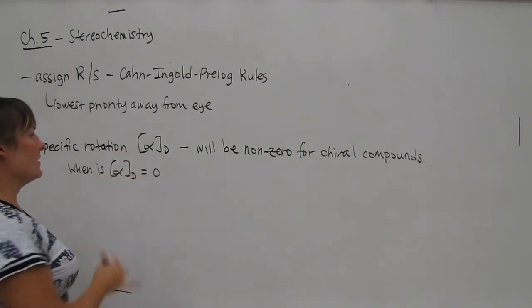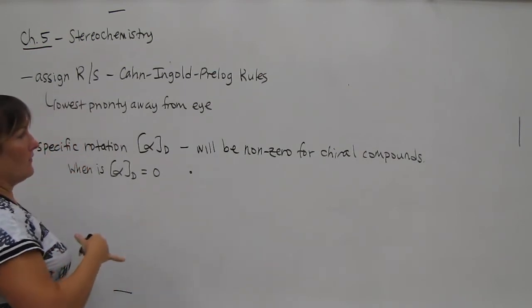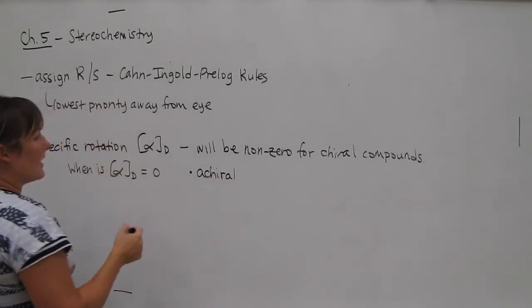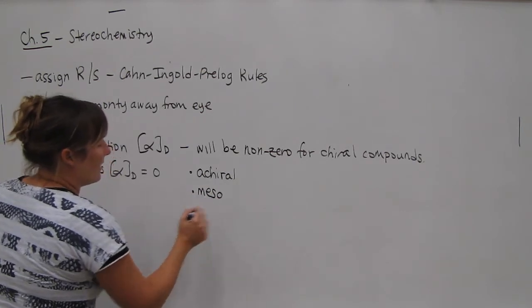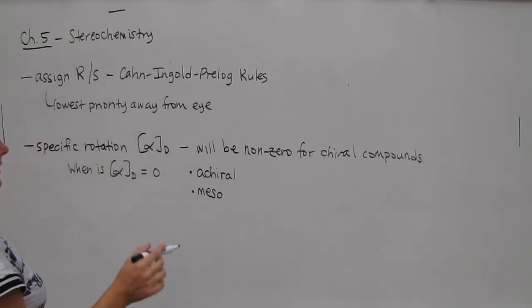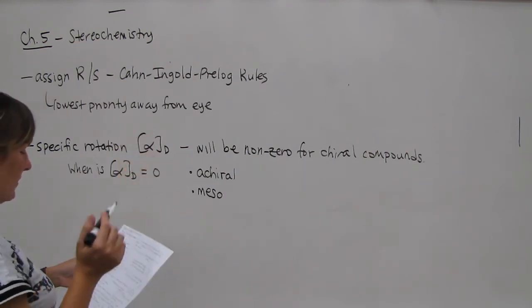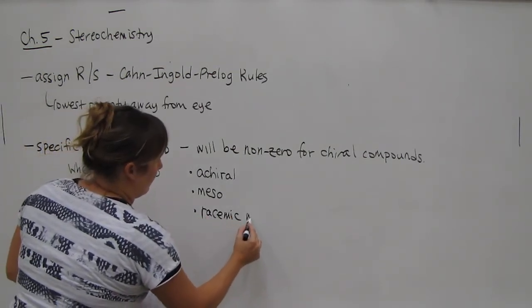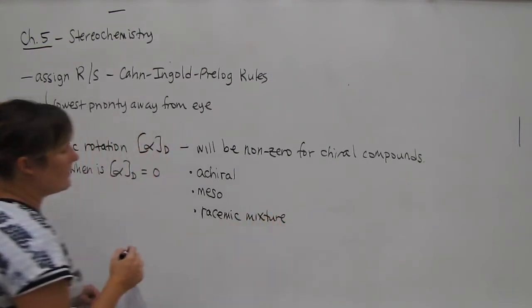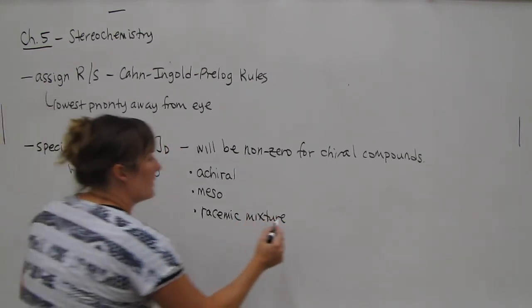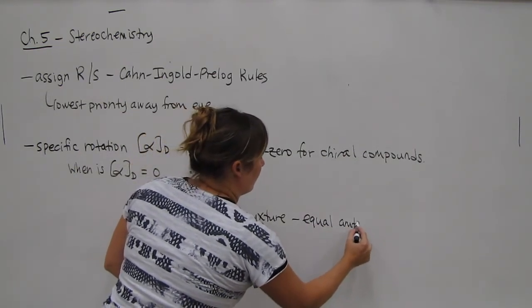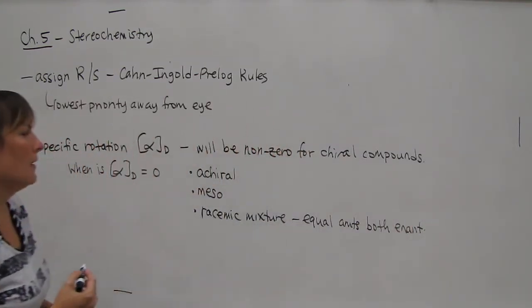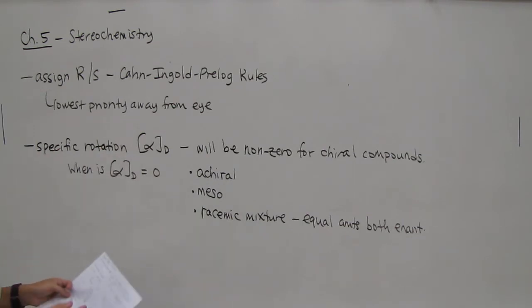There are three cases when this can occur. The first case could be because you have no chiral carbon to begin with, and so you're just achiral. The second case was meso, which is a special case of being achiral, where one stereocenter negates the other because there's a symmetry plane. And the last case is if you have a racemic mixture. And the racemic mixture meant that you had equal amounts of both enantiomers.